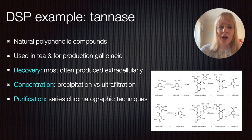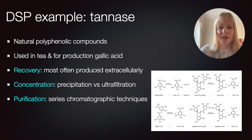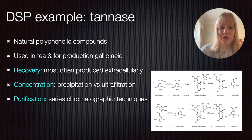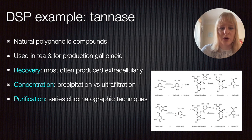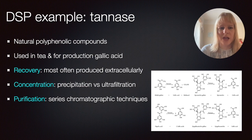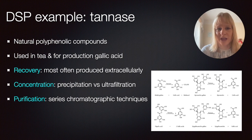The second example is tannase, which is less common. These are natural polyphenolic compounds, and like lysozyme, there's a whole range of tannases to work with, requiring you to adapt the full process accordingly. So far, this product is mainly used in teas but also for the production of gallic acid — tannase can depolymerize substrates and form gallic acid. The recovery step is quite different here because tannase is most often produced extracellularly, meaning you have fewer concerns around cell debris to remove.